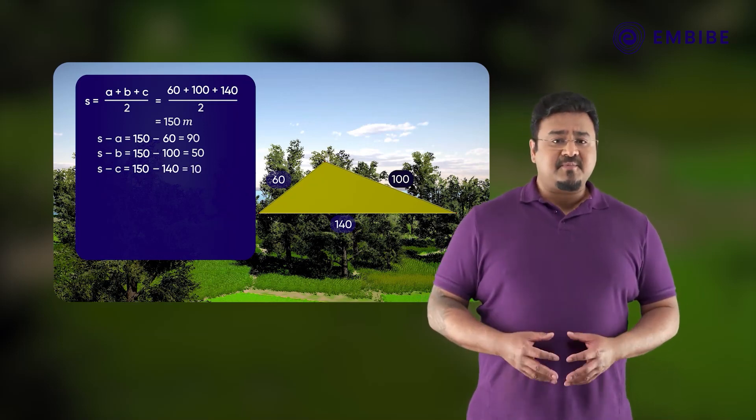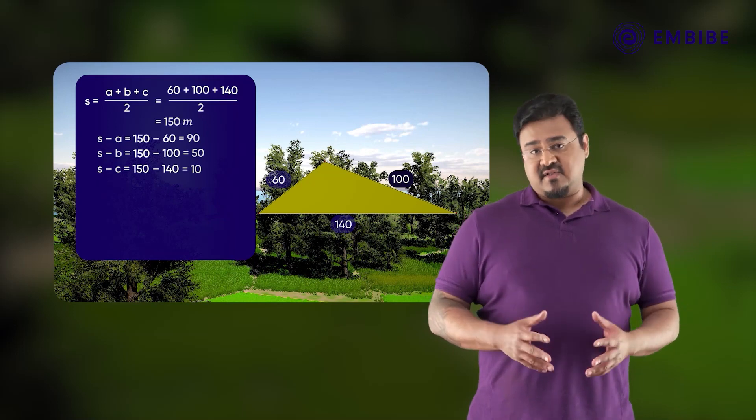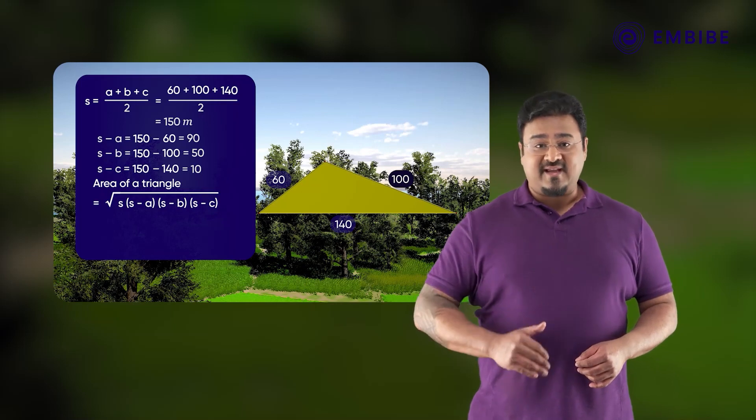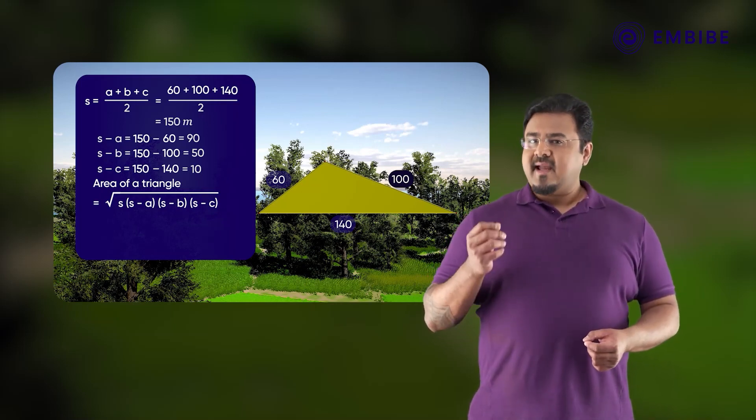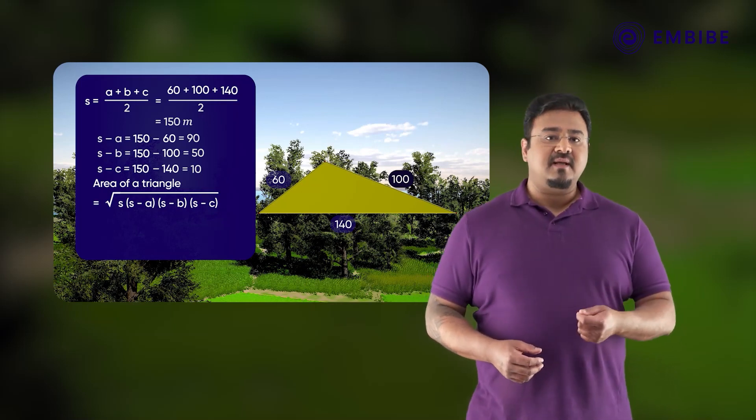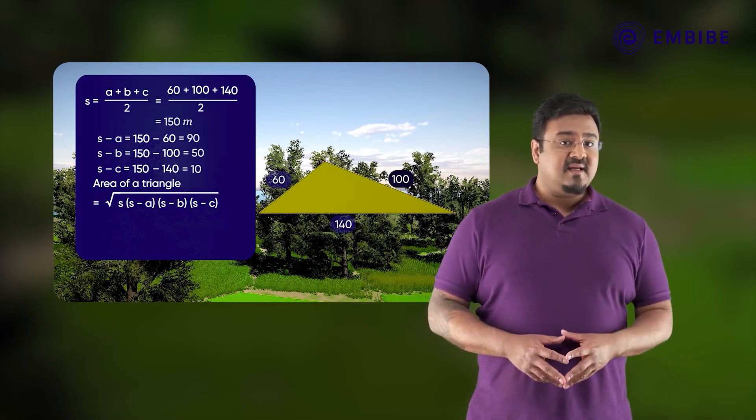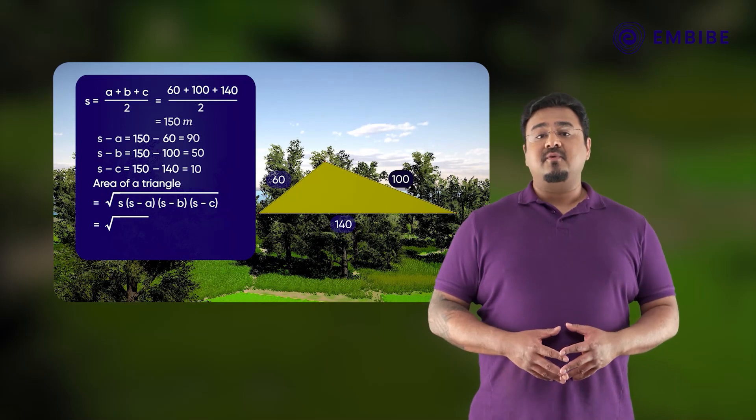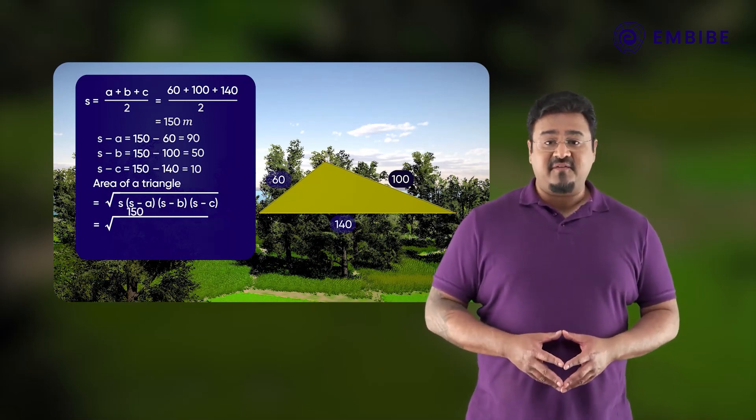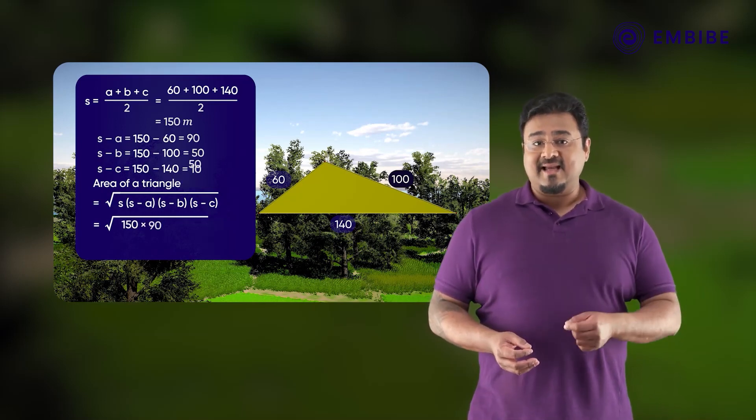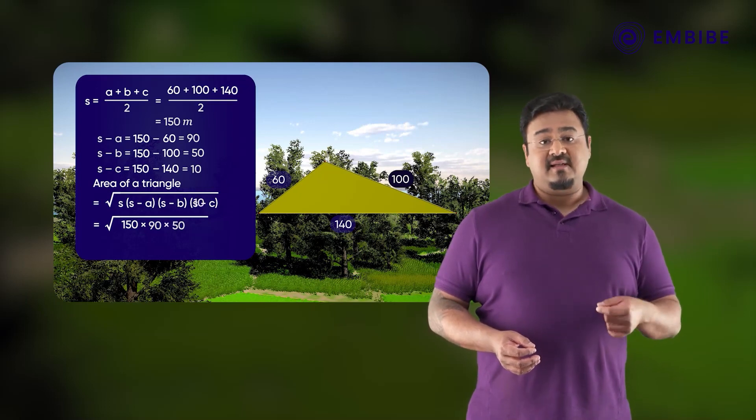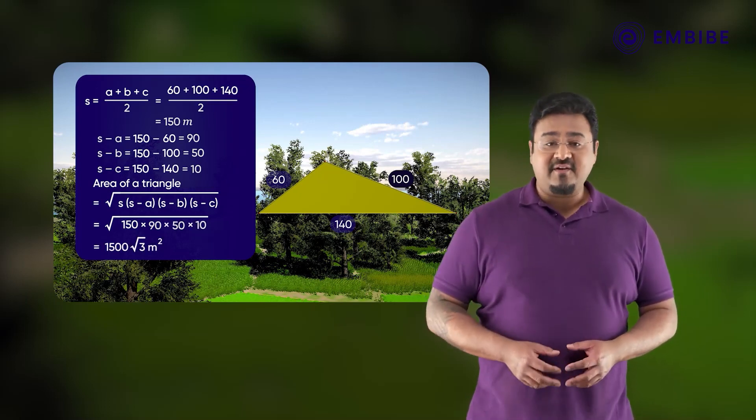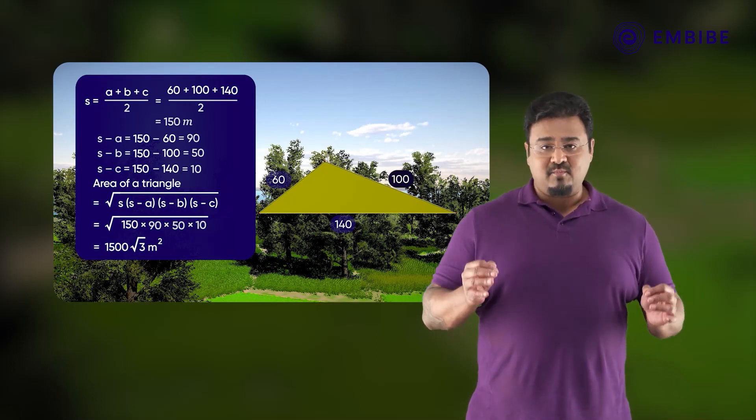Let us substitute these values in Heron's formula. Area of the triangle is equal to under root of S into S minus A into S minus B into S minus C. That is equal to under root of 150 into 90 into 50 into 10 equal to 1500 root 3 meters squared.